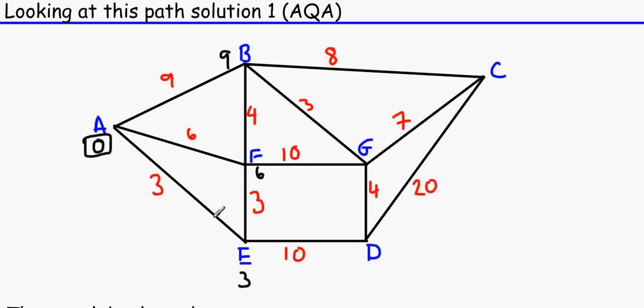Now what you do next is to find the temporary label which is the smallest so far. So three is the smallest temporary label. And now we're going to convert that to a permanent label, because we're not going to change that number anymore. We are not going to go backwards or anything.